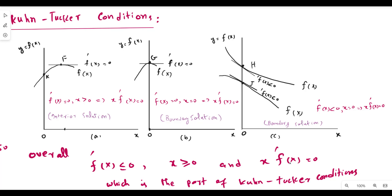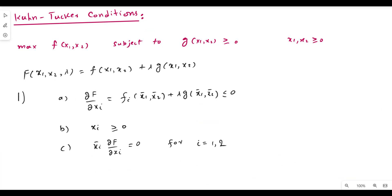What we conclude from all three diagrams is: x is either greater than zero or equal to zero; x·f'(x) is always equal to zero; and f'(x) is either equal to zero or less than zero — so f'(x) ≤ 0. These are the first three conditions of the Kuhn-Tucker theorem, shown with the help of three diagrams.